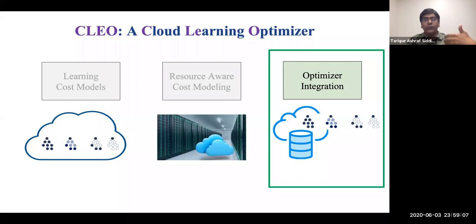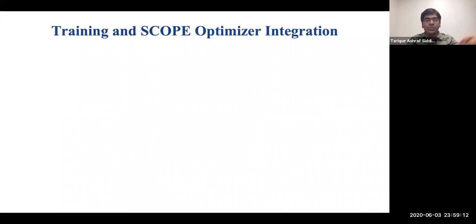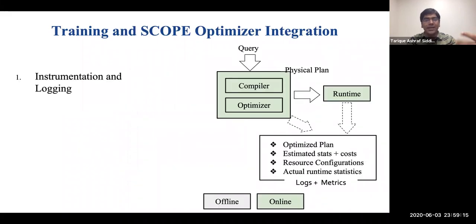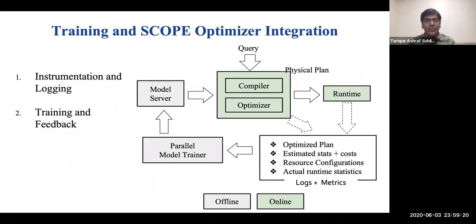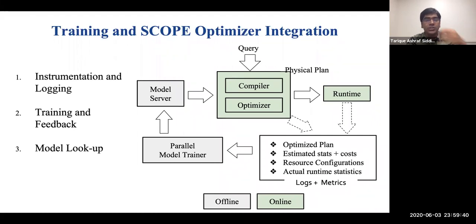Next, I'll describe how we integrate learned cost models within the Scope query optimizer. The integration involves three parts. The first part is instrumentation and logging of query plan statistics and runtime traces. Given the logs, we analyze them and learn all cost models in parallel using our Scope-based model trainer. Then we serialize the models and feed them back to the optimizer. All models for a cluster are loaded by the optimizer into a hash table, and models are looked up using signatures which uniquely identify each subgraph. Finally, for cost estimation within the optimizer, we replace calls to the default cost models with the learned model invocations.